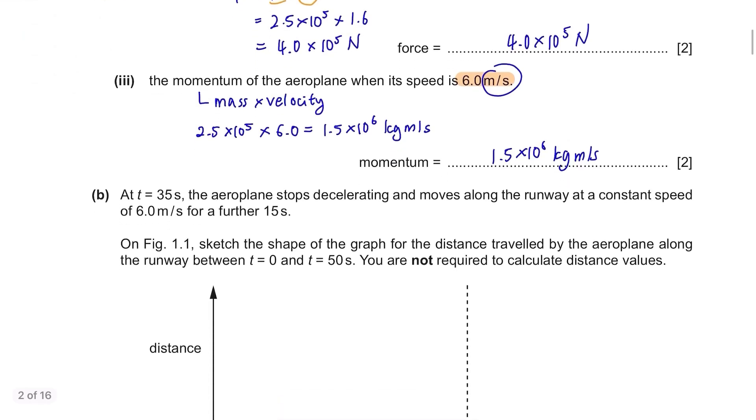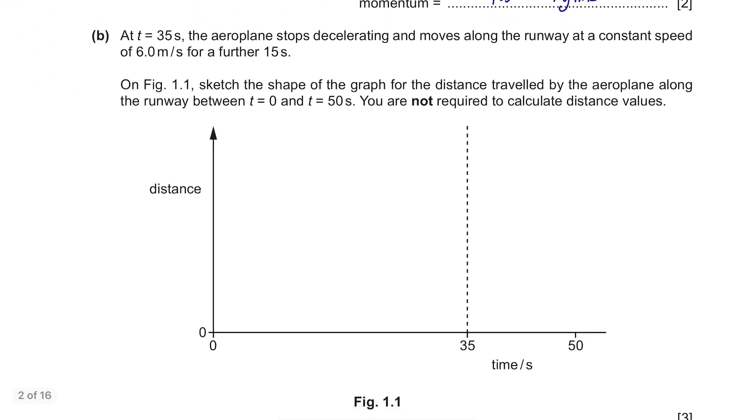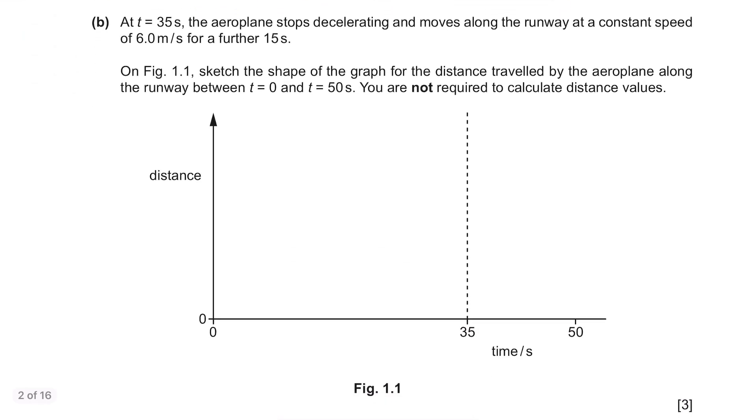Part B. At t equals 35 seconds, the aeroplane stops decelerating and moves along the runway at a constant speed of 6.0 m per second for a further 15 seconds. On figure 1.1, sketch the shape of the graph for the distance travelled by the aeroplane along the runway between t equals 0 and t equals 50 seconds. You're not required to calculate distance values.